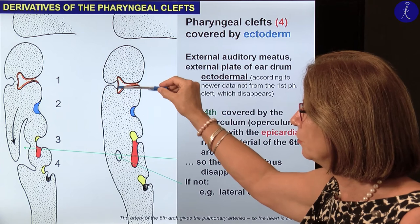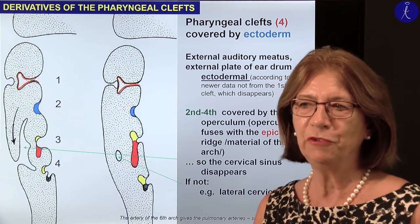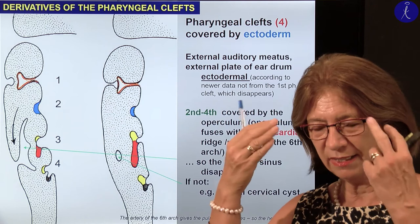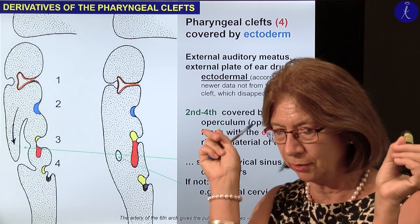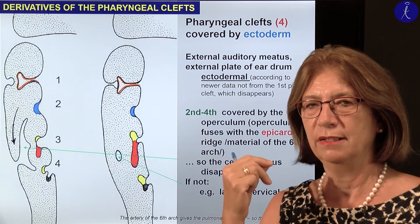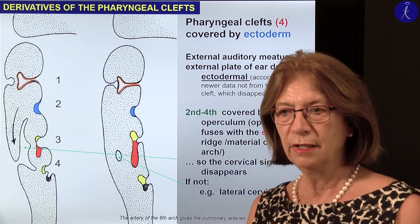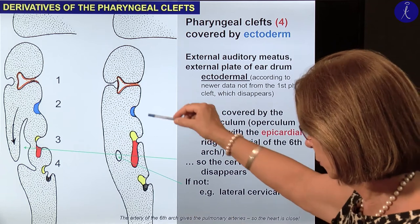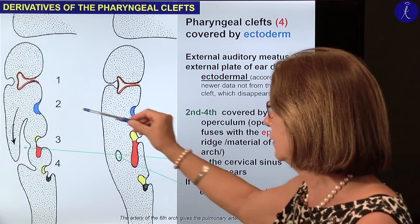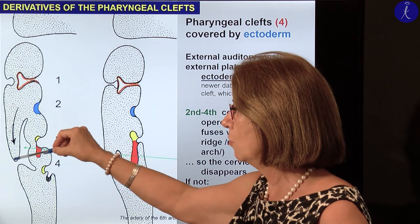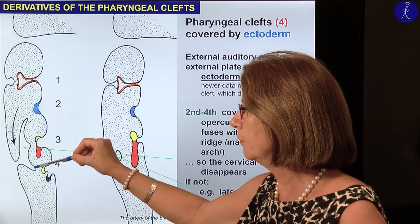This is the remnant of the first membrana obturans. If you were a fish, you could suck water into your mouth, press it into your nasopharynx, then get it through the auditory tube, middle ear, and spray it out through your ear. That's why if you take a bony skull you can put a probe through the external auditory meatus into the middle ear — because there is no eardrum. The material of the second pharyngeal arch will have a long process — the operculum — which will cover the second, third, and fourth pharyngeal clefts.